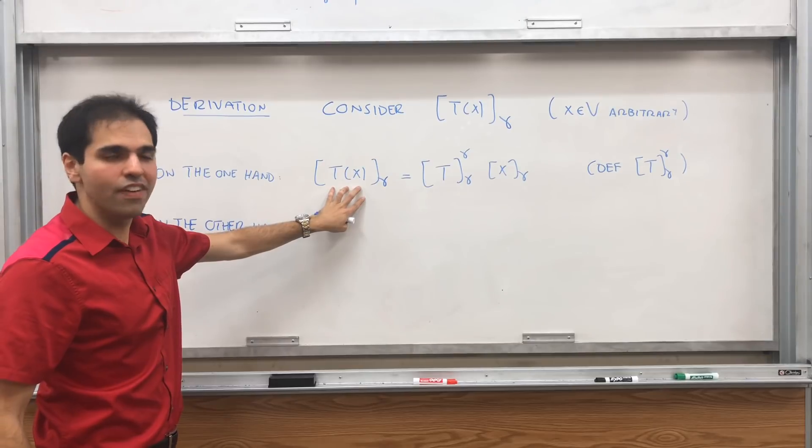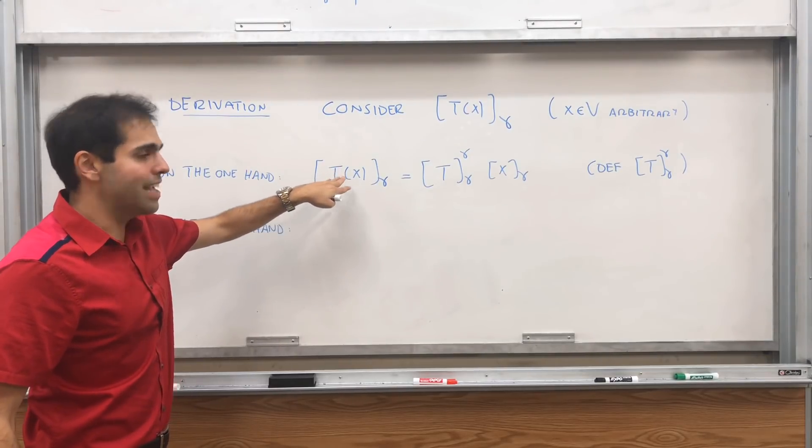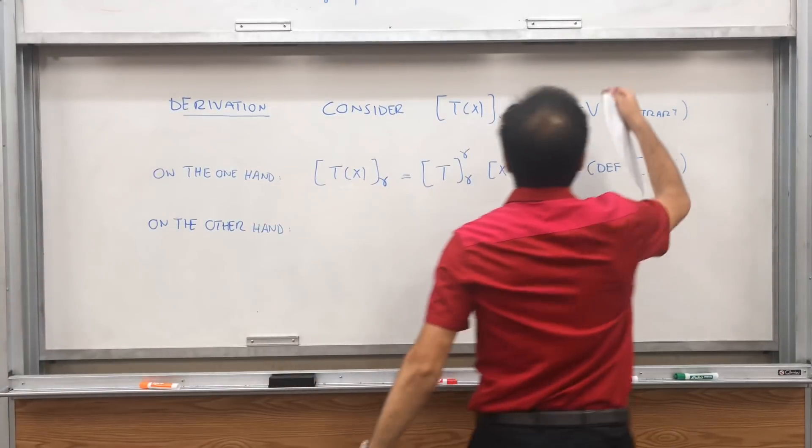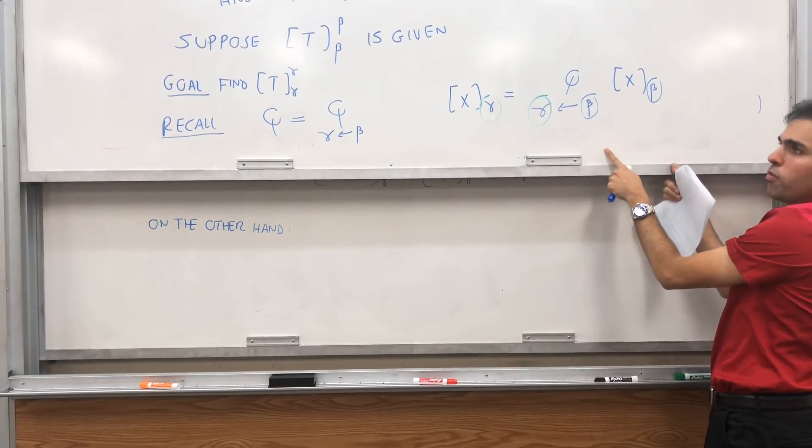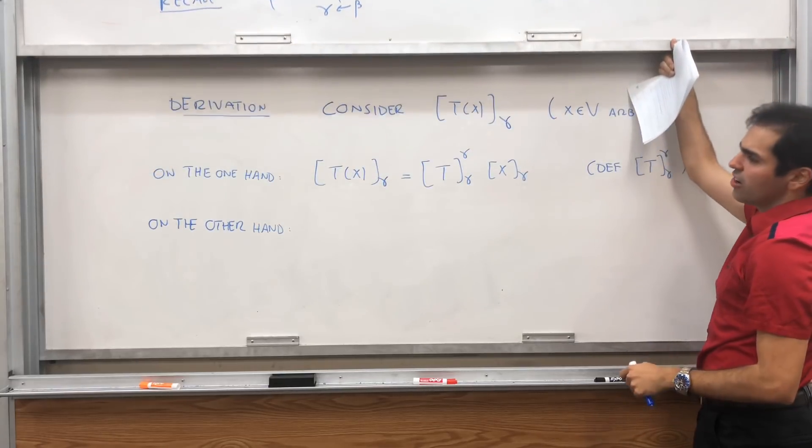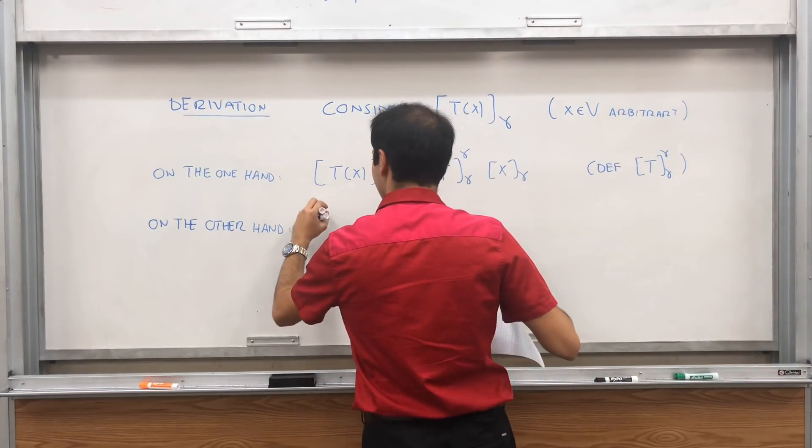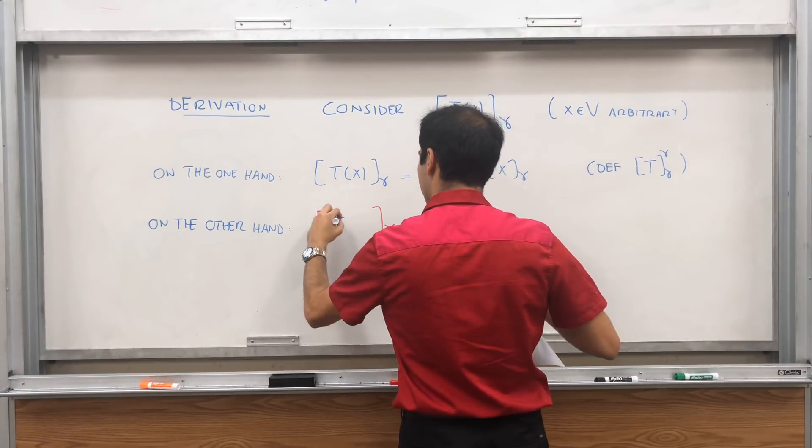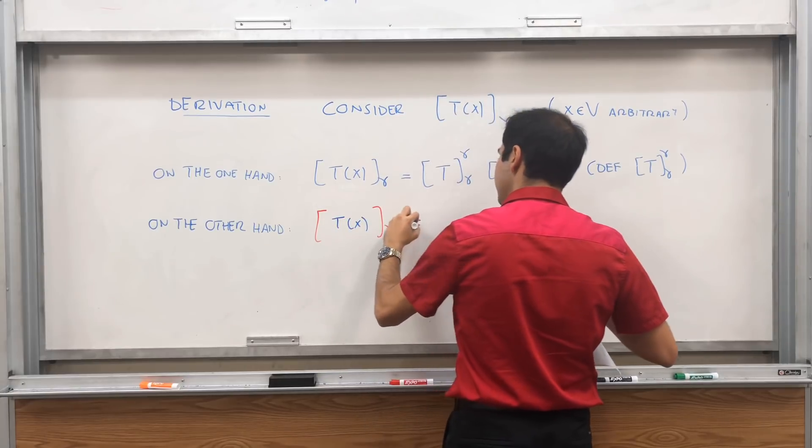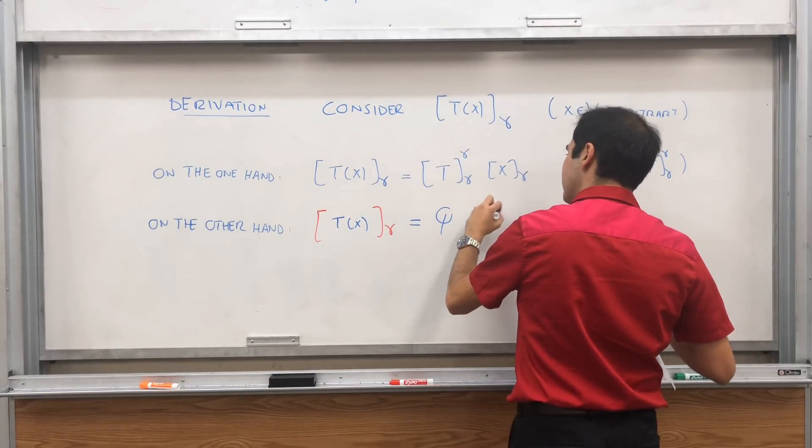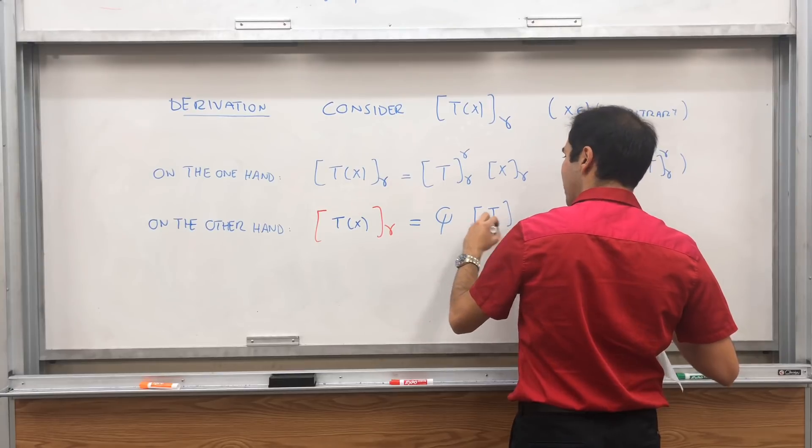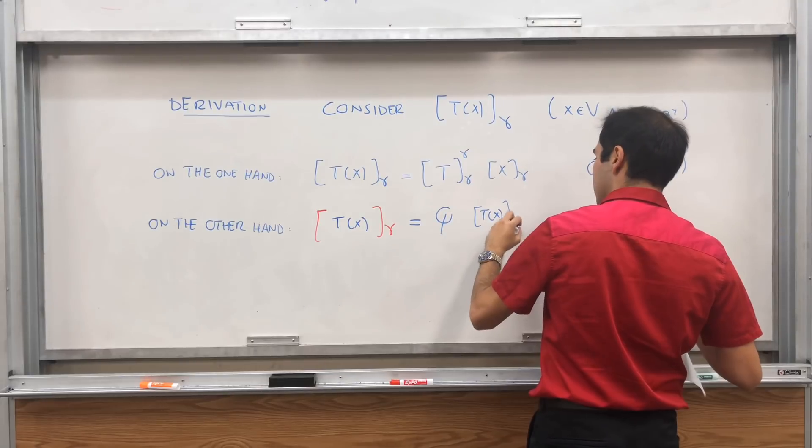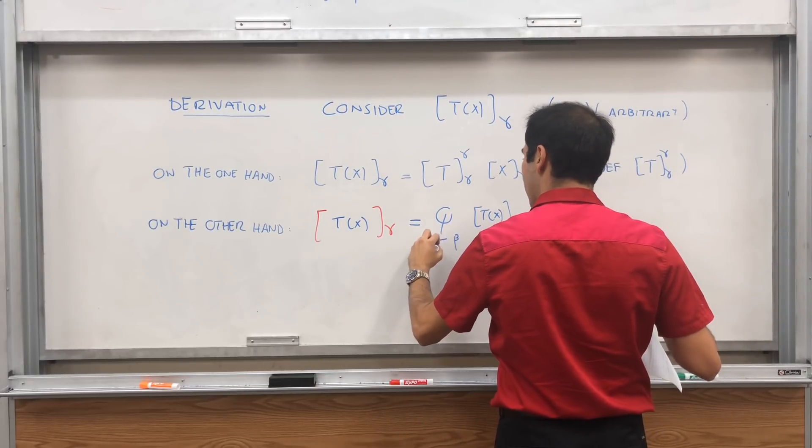On the other hand, we have this vector T of X, but we just evaluate this with respect to the new coordinates. Therefore, we can just use the change of coordinates formula. So in particular, the vector T of X with respect to the new coordinates equals Q times the vector T of X with respect to the old coordinates from beta.